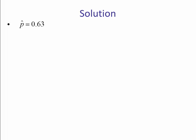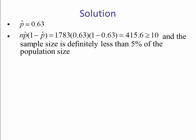P hat is 0.63 as we computed in the previous video. We need to check the requirements. N times P hat times 1 minus P hat equals 1783 times 0.63 times 1 minus 0.63, which gives us 415.6, which is larger than 10. And we also know that the sample size is less than 5% of the population size. Our population is all adults living in the US. Our sample size was only 1,783.